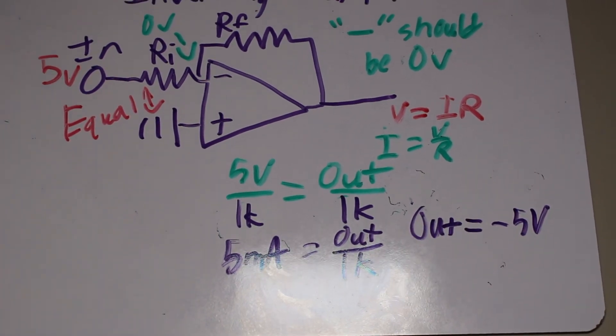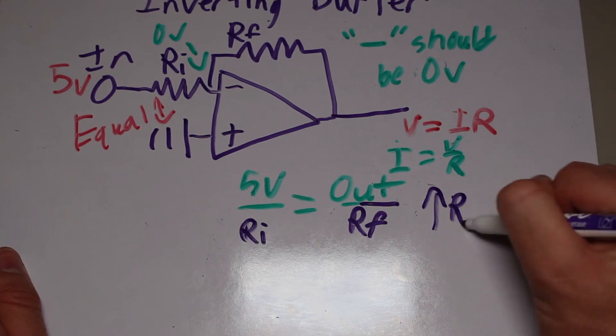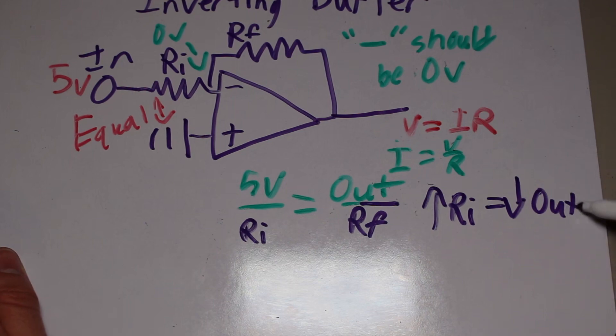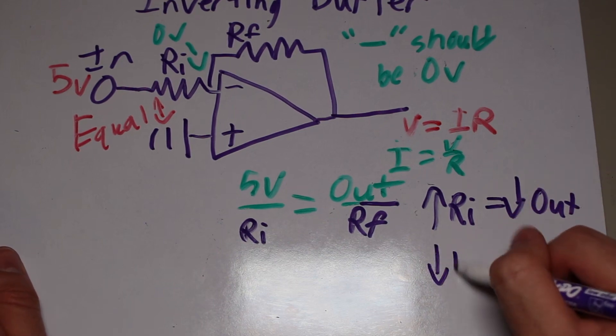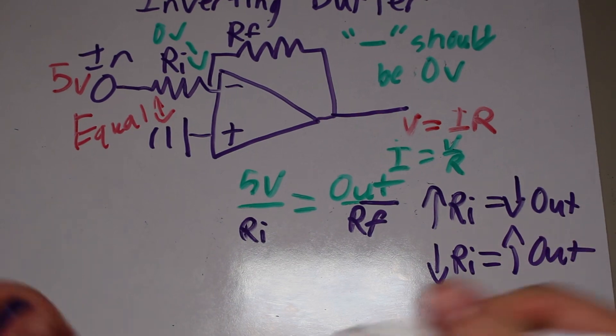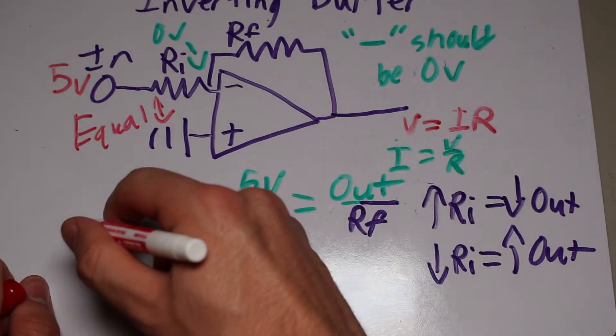However, we can do more than just invert our signal. We can also amplify it or even integrate it. Let's start with amplification. Remember how we can calculate currents to determine our output voltage? Well, if we change the resistors, we also need to change the output voltage to maintain equal currents. If we increase the input resistor, then the required current is lower, so the output voltage has a lower voltage.